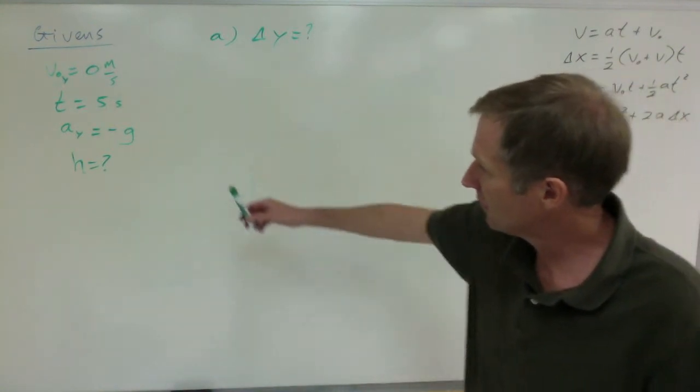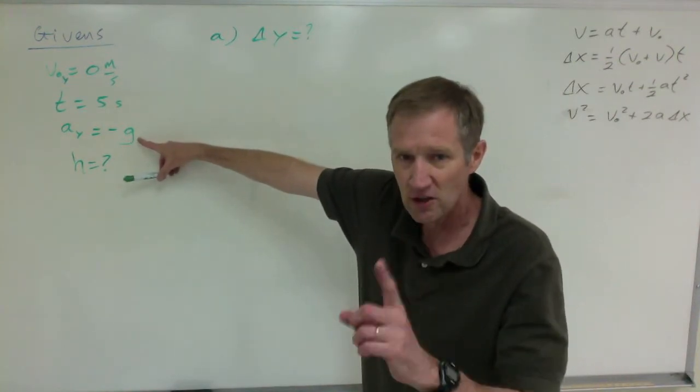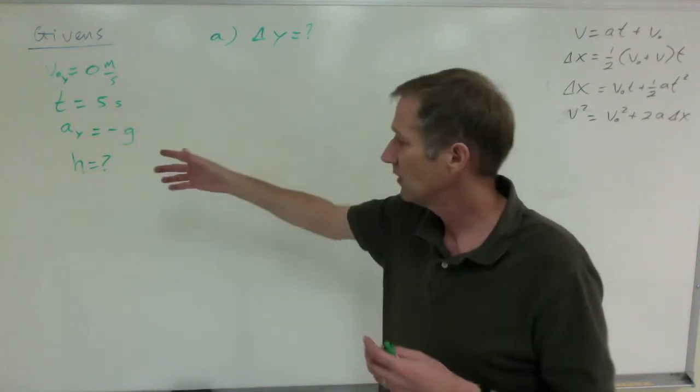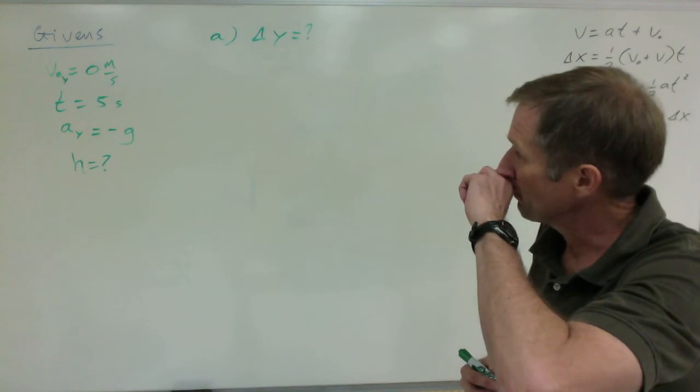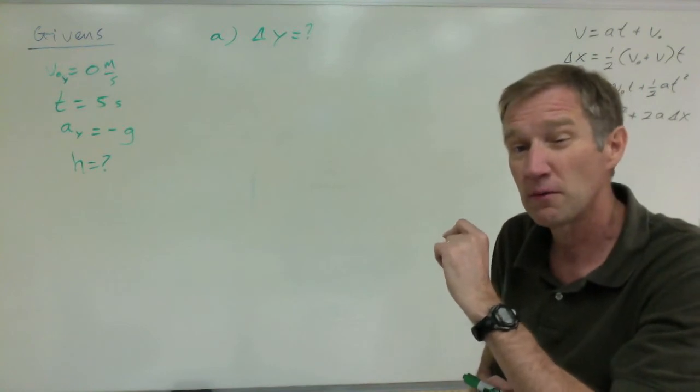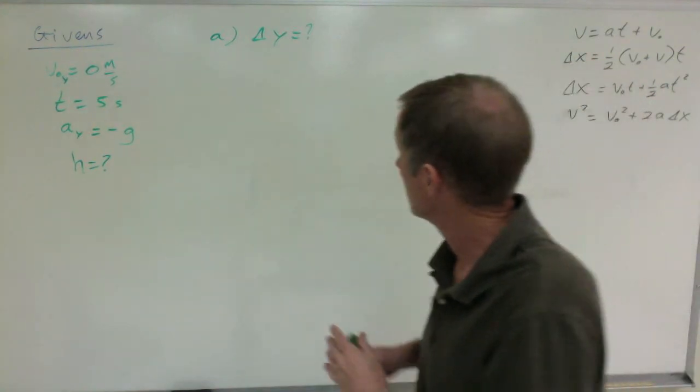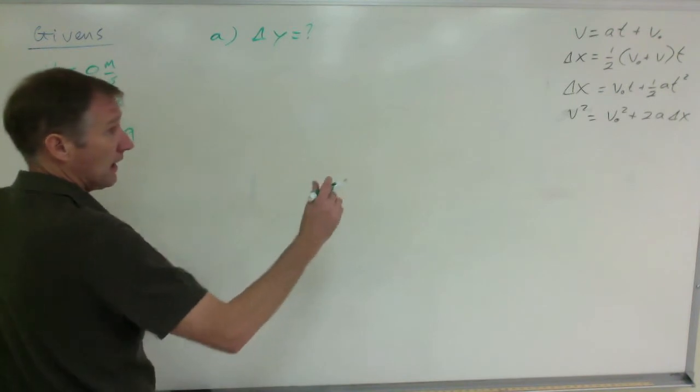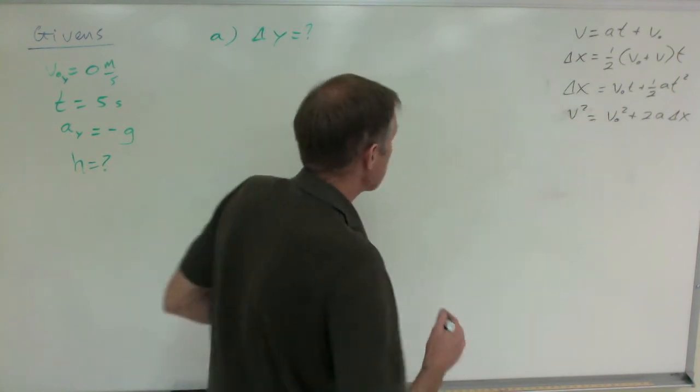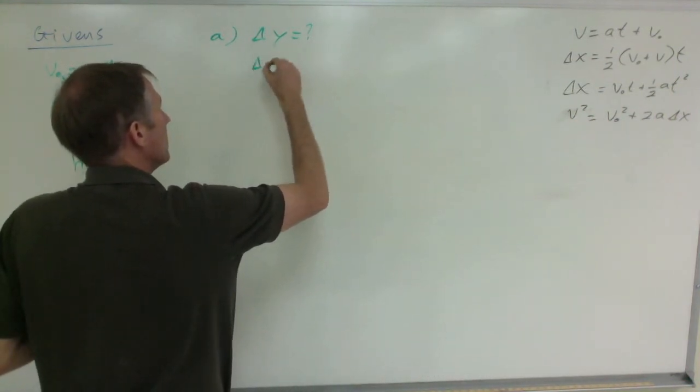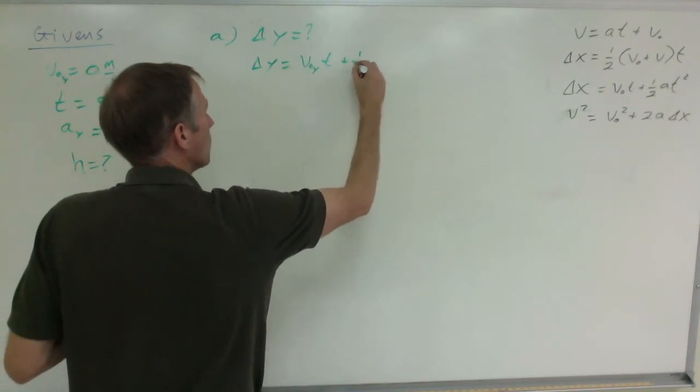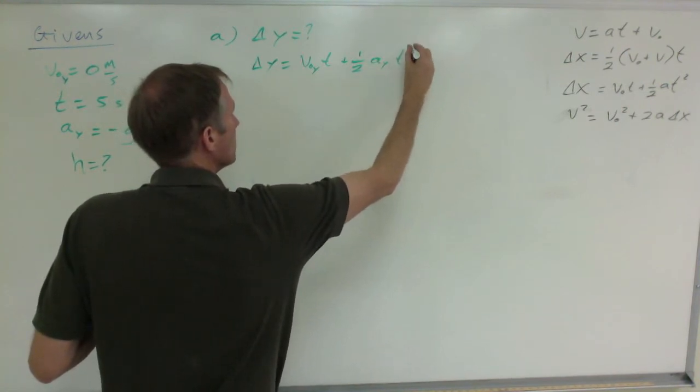That would be before it hits the ground. Its velocity before it hits the ground is not zero as long as it's falling. As soon as it touches something, its acceleration is no longer that and you can no longer use that in your equation. The velocity we're going to solve for is the velocity with which it strikes the ground, immediately before it touches anything. Back to here though, I can't use anything with velocity in it because I don't know it. That's the only equation I have. Therefore, delta y equals v₀y times t plus one-half ay t squared.